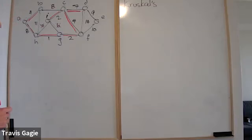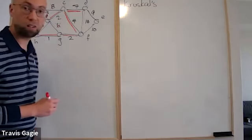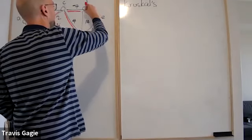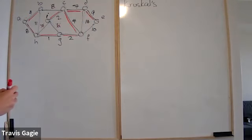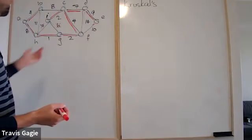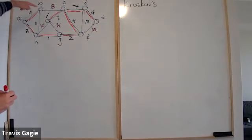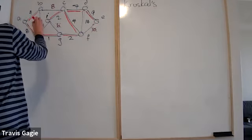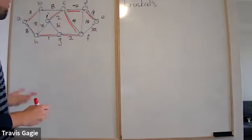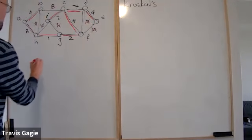Cost 9: D to E — no cycle, we add it. Cost 10: E to F — creates a cycle, we don't add it. Cost 11: B to H — creates a cycle, we don't add it. Cost 14: D to F — creates a cycle, it creates a triangle, so we don't add it. Our tree connects everything — it's spanning, it's a tree, it's acyclic, and we believe it's minimum.